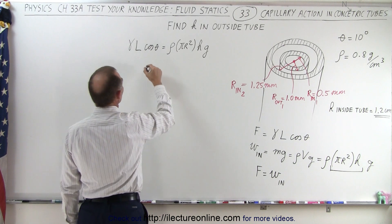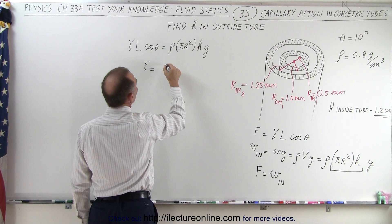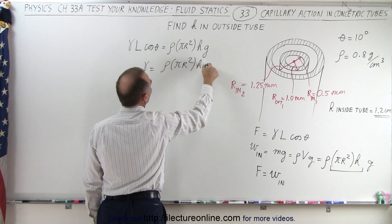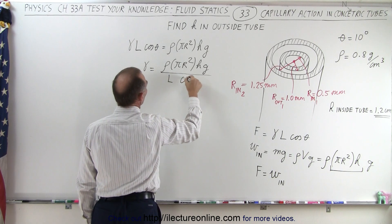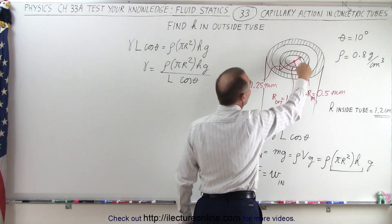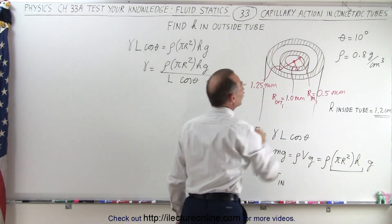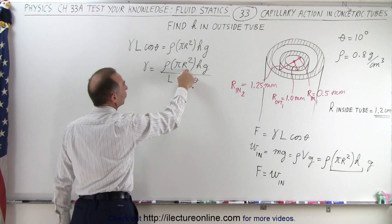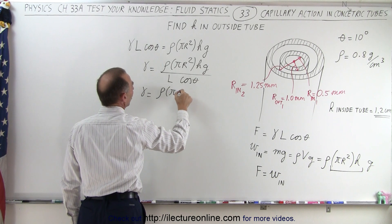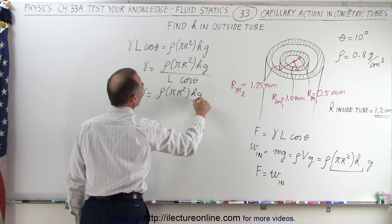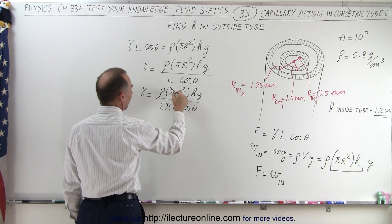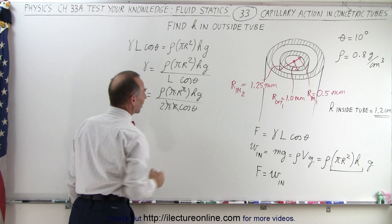We can say the surface tension equals density times pi r squared times h times g, all divided by L times cosine of theta. The contact length is the circumference of the inside diameter, which is 2 pi r — the same r. So surface tension equals density times pi r squared times h times g, divided by 2 pi r times cosine of theta. The pi's cancel and one r cancels.